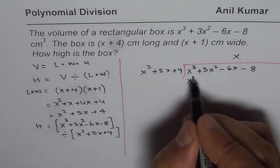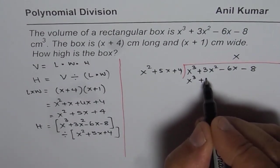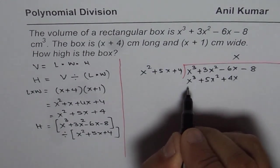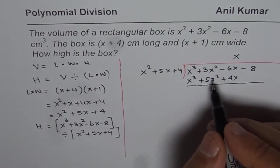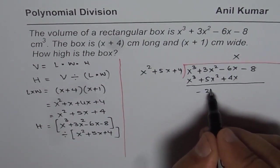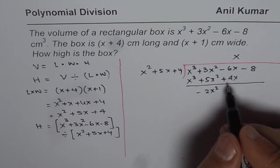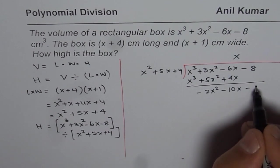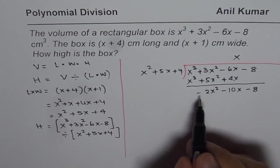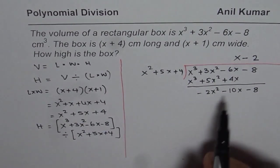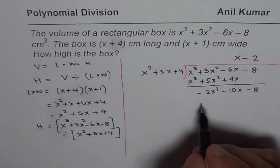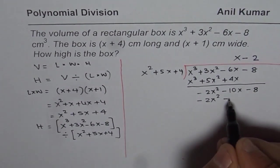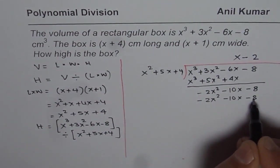X times x³ + 5x² + 4x. And when you take away you get -2x² and here you get -10x. Bring down -8. You need to multiply by -2.